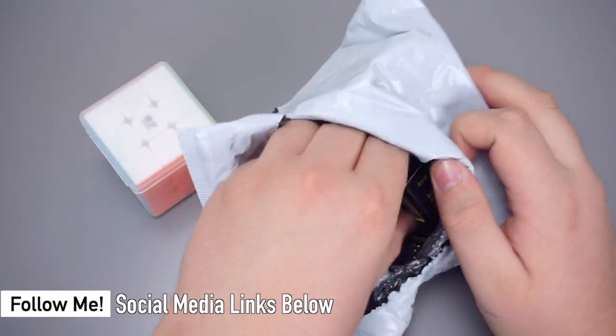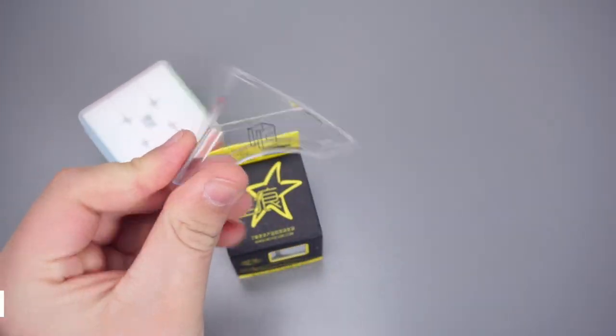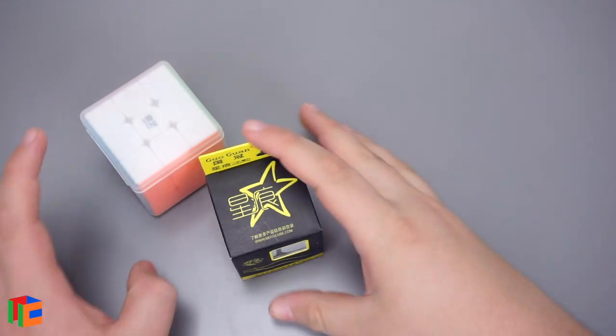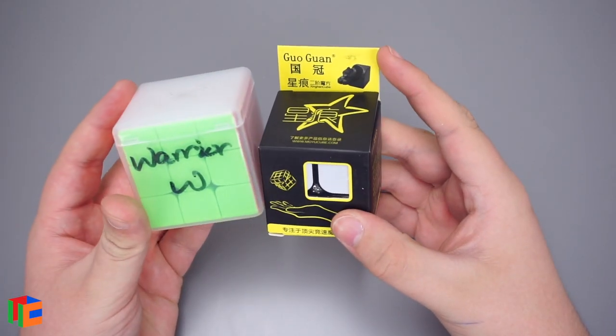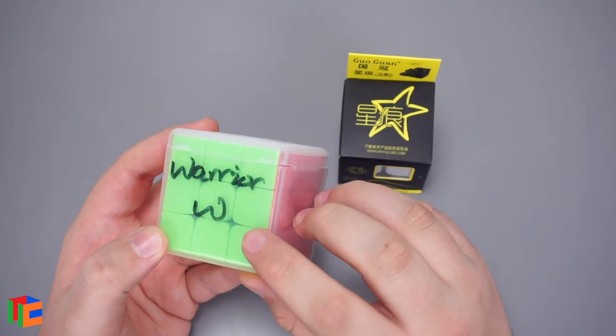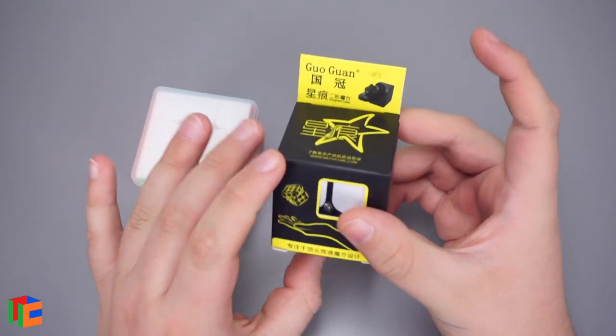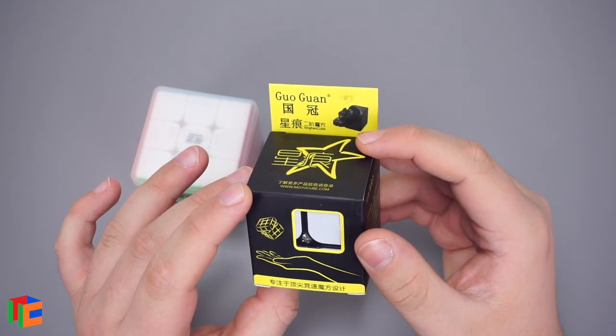Alright, so it looks like we've got a 3x3 and a 2x2 and another one of these transparent stands. Let's go ahead and see what these puzzles are. It looks like it's written on the box. This one is the Warrior W and this is the GoGuan 2x2.